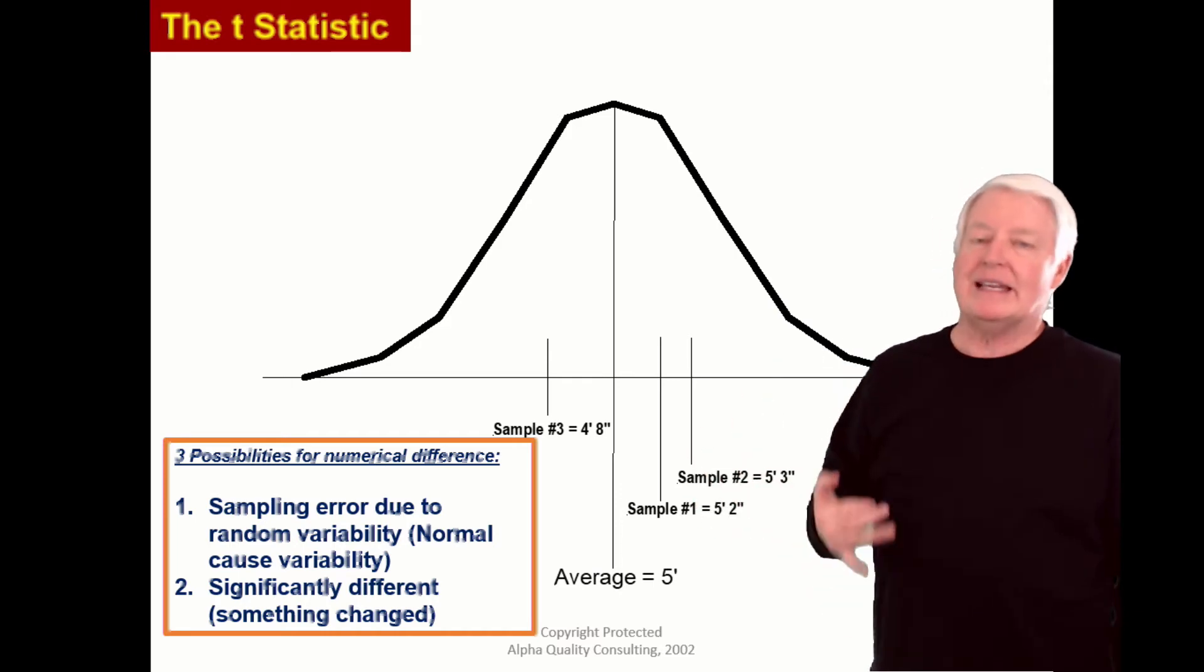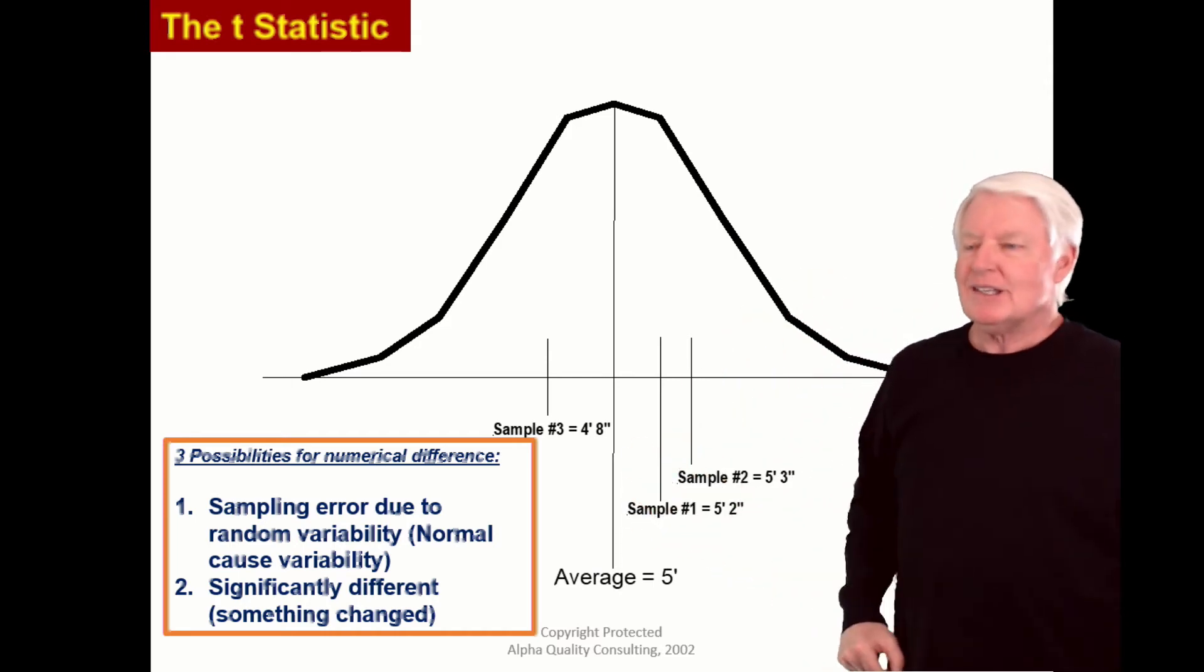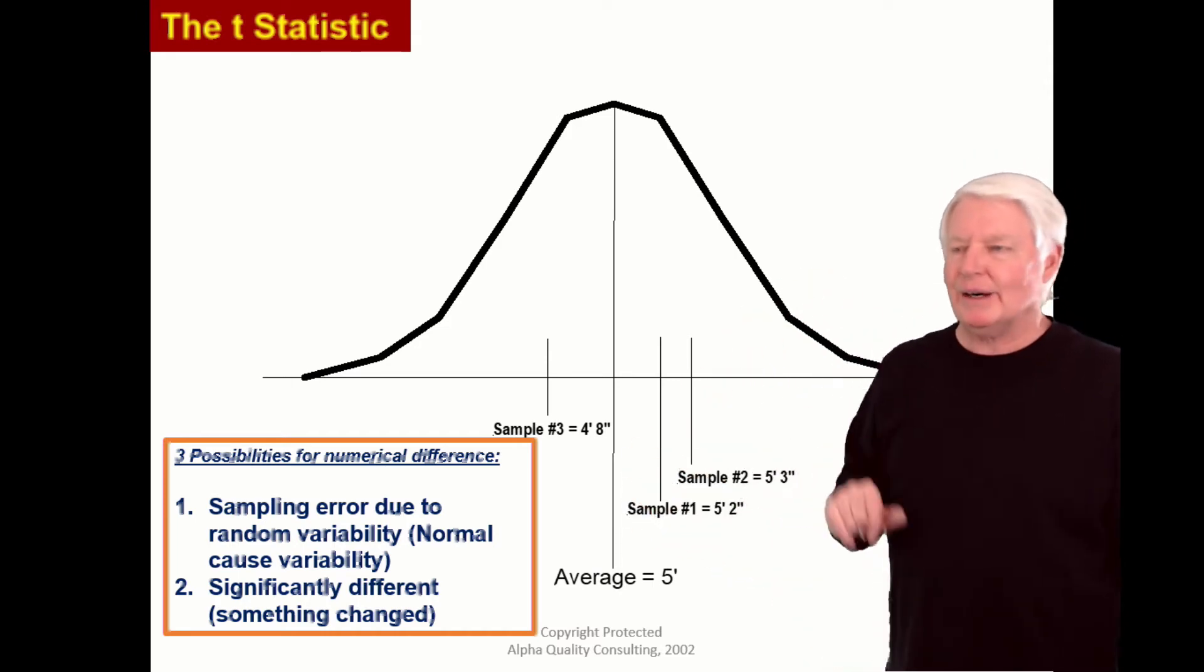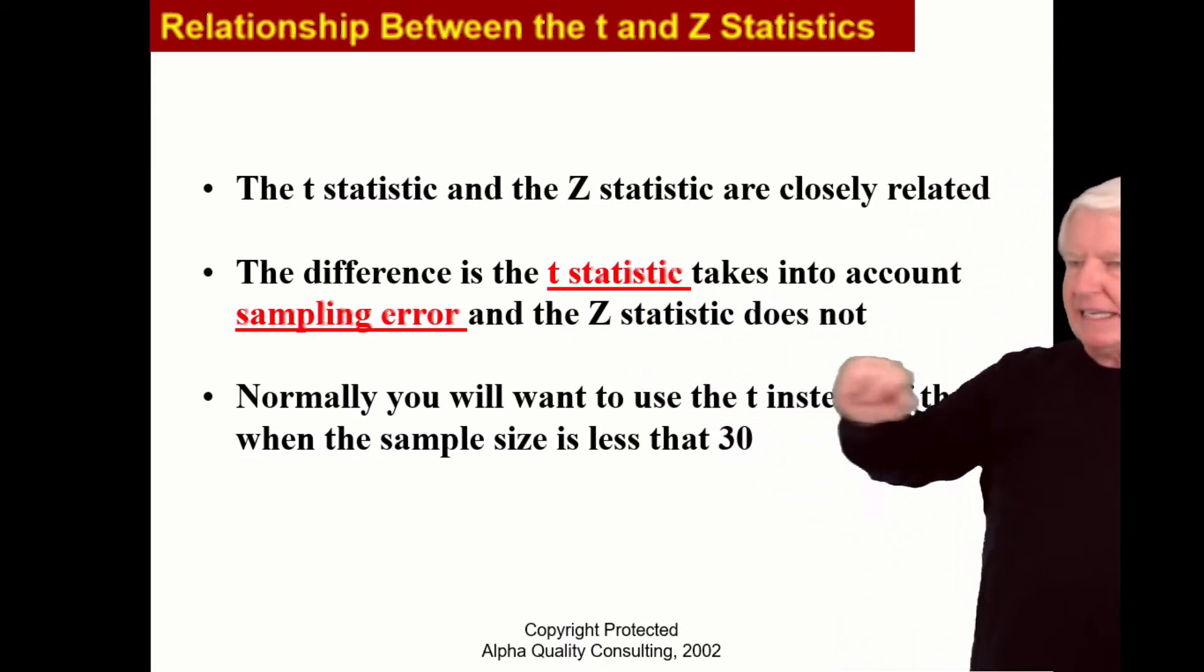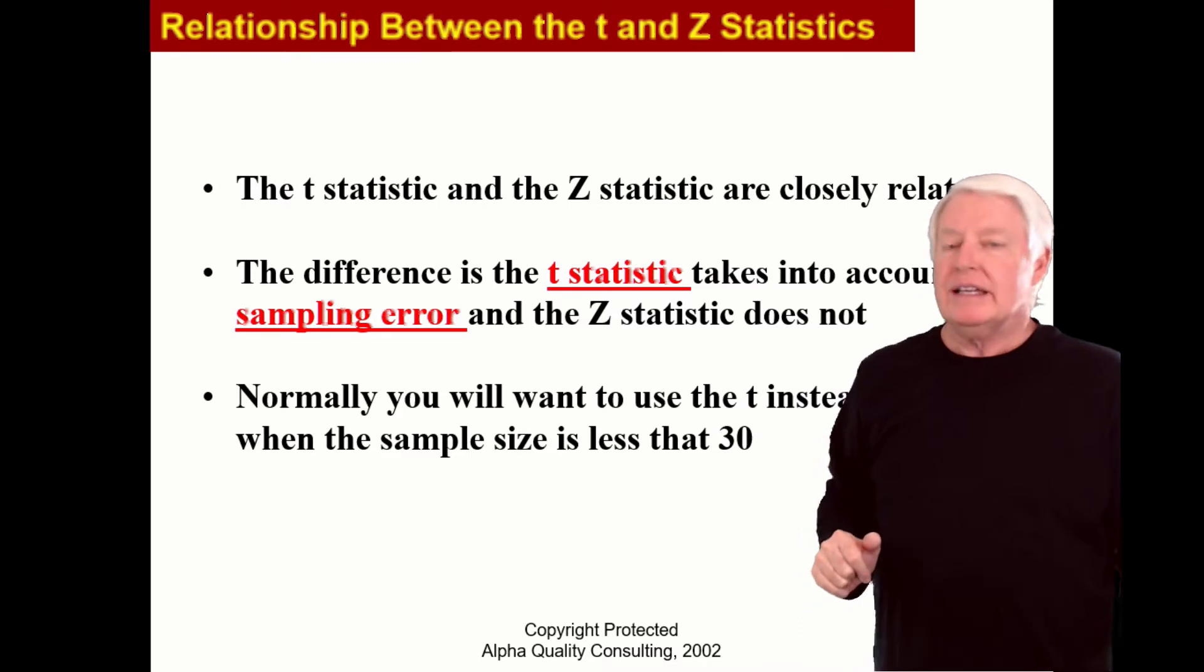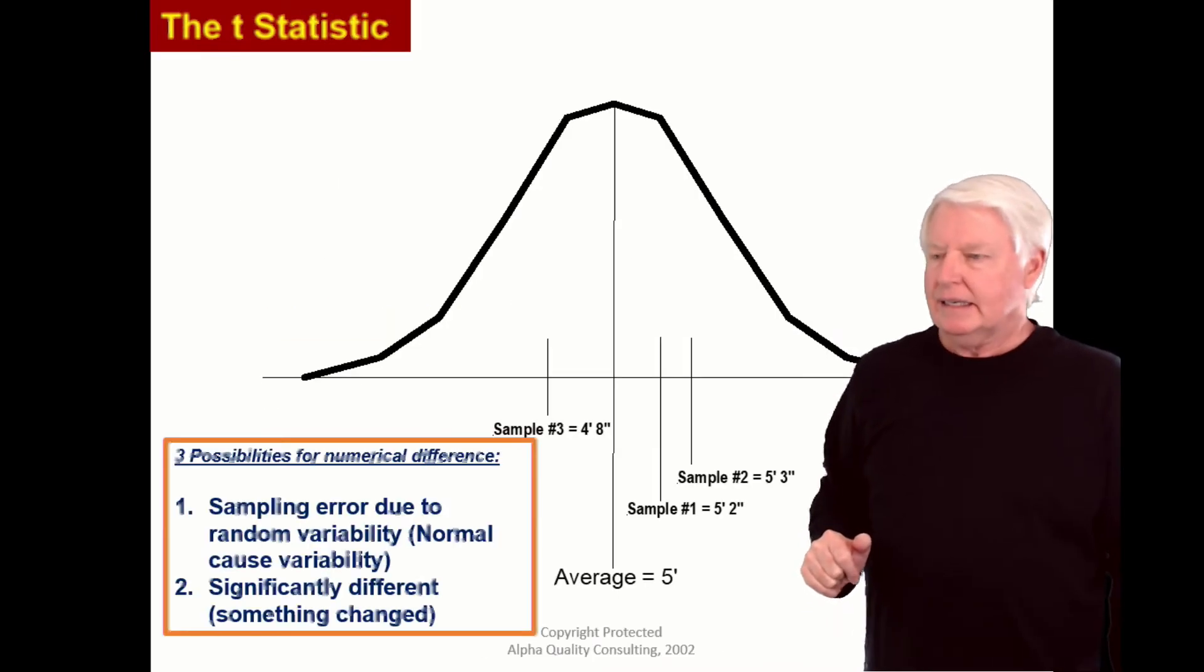That is error. There's an error between the sample average and the true average. What is the error from? The error is from sampling. So we call that sampling error.